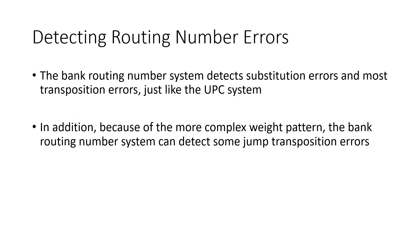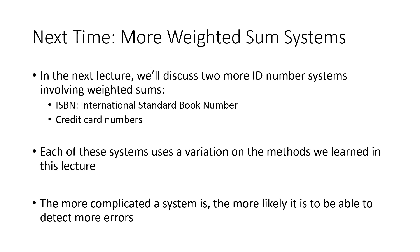The routing number system detects substitution errors and most transposition errors, just like the UPC system. In addition, because of the more complicated weight pattern, it can also detect some jump transposition errors. Next time we'll talk about two more ID number systems: ISBNs — International Standard Book Numbers — used for identifying books, and credit card numbers. Each uses a variation on the weighted sum systems we talked about in this video. The more elaborate a check digit system is, the more likely it is to detect more types of errors — that's why these systems are so complicated.